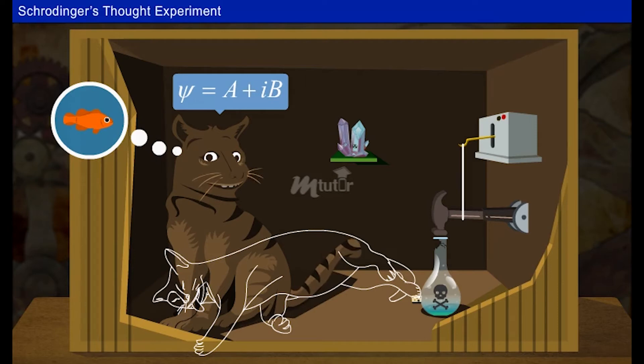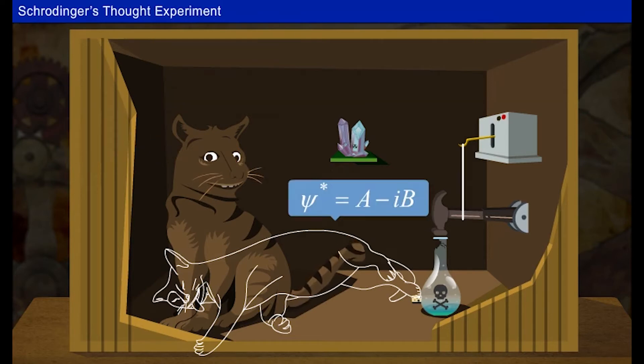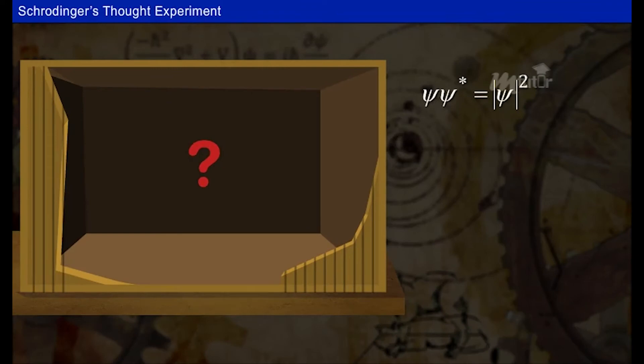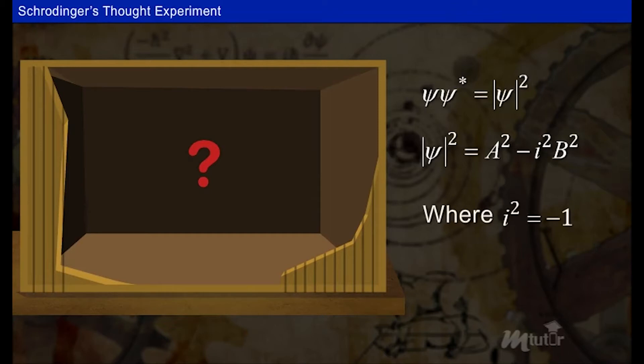Let psi be the probability of the cat to be alive. Psi is equal to a plus ib. And psi star be the probability of the cat to be dead. Psi star is equal to a minus ib. So psi and psi star refer to superposition of states. Since the cat can either be dead or alive, the state of superposition is not seen. And so modulus of psi square is the product of psi star and psi, equal to a square minus i square b square. We know that the value of i square is minus 1, which gives a square plus b square.